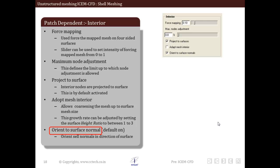Next is the orient surface normal option. This option orients normals of the surface mesh in the same direction as the surface normals. This option is enabled by default.